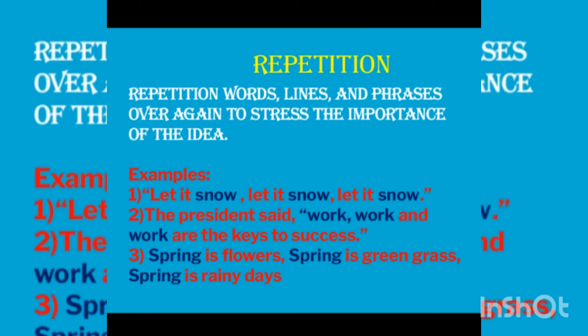Examples of repetition: First — 'Let it snow, let it snow, let it snow.' The word 'snow' is repeated three times. When words are repeated twice or thrice, that is repetition. Second — 'The president said work, work, and work are the keys to success.' The word 'work' is repeated three times — so that is repetition.